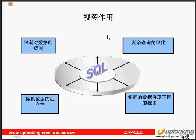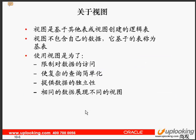视图的作用有以下几种：第一，限制我们对数据的访问，比如做了一些特殊的查询语句，视图当中不能进行相关的定门操作；第二，对数据提供独立性，不同的视图展现不同的数据访问结果；第三，可以把复杂的语句变得简单化。视图是基于其他表或者视图创建的一种逻辑表，视图没有自己的数据，视图后面查询语句中的那个表叫做基表。